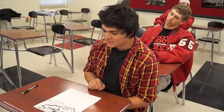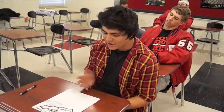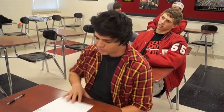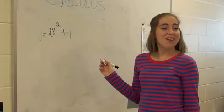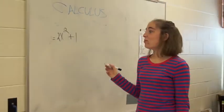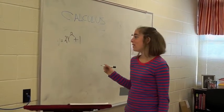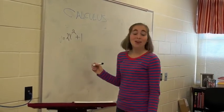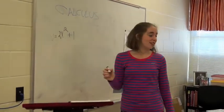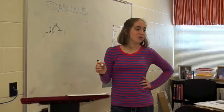Golly gee, Ms. Scheiser, how'd I get an F? Oh well, I won't need it anyway. So we have our equation: y equals 2x squared plus 1. And now we need to find the critical numbers.